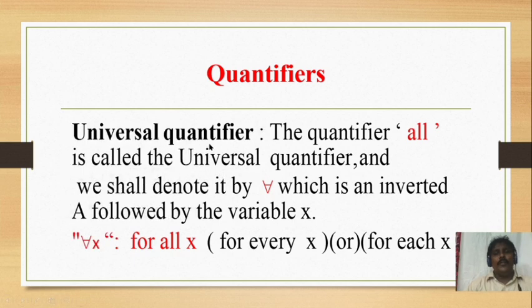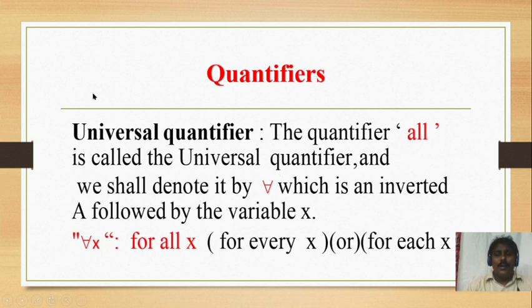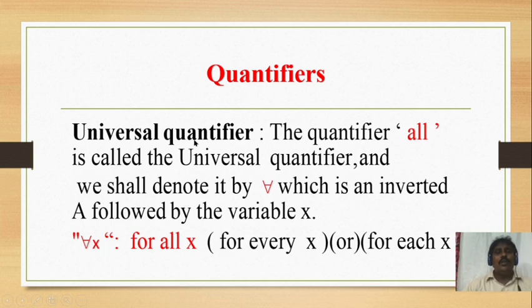The universal quantifier means 'all' and we denote it by the symbol for all — an inverted A followed by a variable. So if we consider variable x, we simply write 'for all x,' and that is the universal quantifier. The quantifier 'all' is called the universal quantifier, denoted by the symbol ∀ followed by variable x.